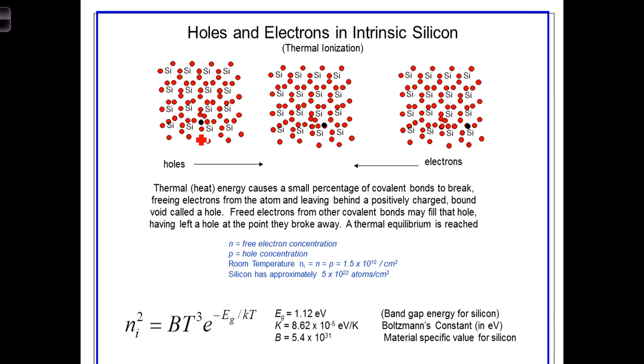Over time, these thermally liberated electrons randomly move in a type of Brownian motion and reform bonds in other holes vacated by other electrons. Thus, a small percentage of the bonds are vacated at any given time. But an equilibrium is reached where the rate of hole formation equals the rate of recombination.